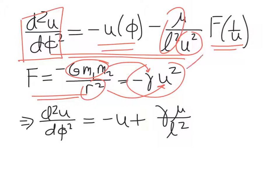And so then when we plug this into our equation, we get this as a second-order differential equation for u as a function of phi. And it turns out we can solve this pretty easily.